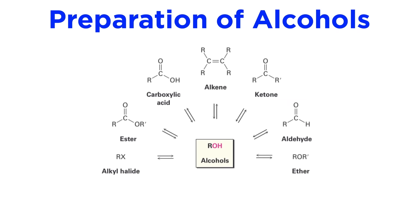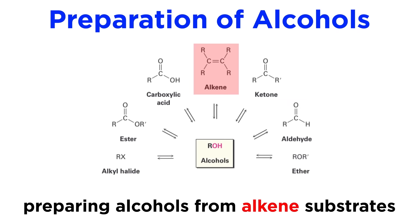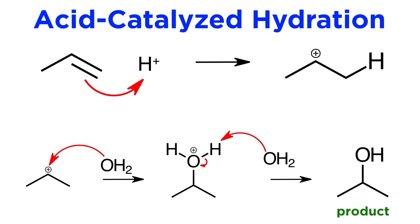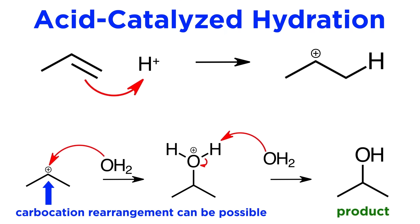We will want to review the techniques that will allow us to do this, and right now we will focus on the methods that utilize alkene substrates. From alkenes, we can prepare alcohols by acid-catalyzed hydration. This is an addition reaction where the pi bond is protonated, and then water coordinates to the carbocation. This is the simplest approach, but it has limitations, as carbocation rearrangement can occur, and there is no stereochemical control.